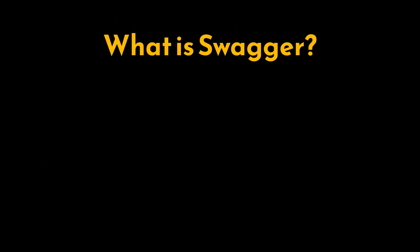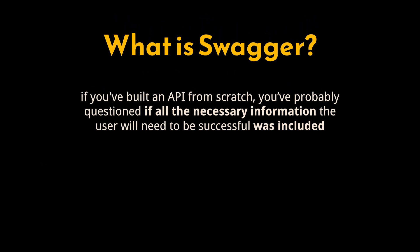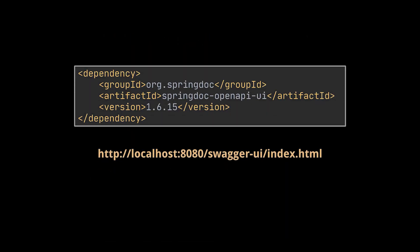So what is Swagger? If you've built an API from scratch, you've probably questioned if all the necessary information the user will need to be successful was included in its documentation. Swagger saves a lot of time in writing this API documentation, all while helping us follow the Open API guidelines.